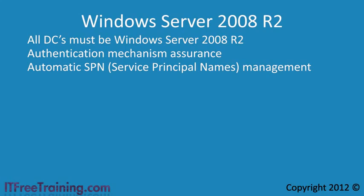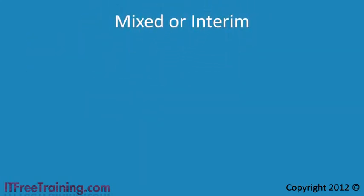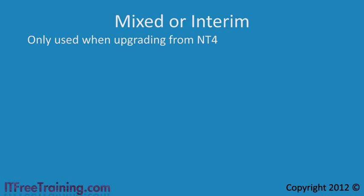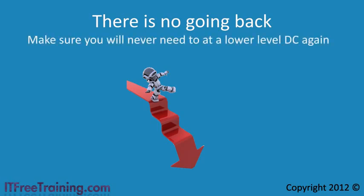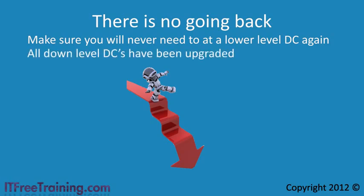That's it for the domain functional levels overview. For completeness, if you ever see domain functional levels with 'Mixed' or 'Interim' in the name, these are domains in the process of being upgraded from Windows NT4. If you no longer have any NT domain controllers on your network, raise your domain functional level to one of the levels covered in this video. Note that once you raise the domain functional level you cannot go back, so ensure you will never add lower-level domain controllers and that any down-level domain controllers have been upgraded or removed before raising.